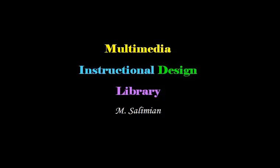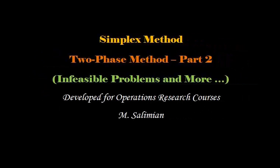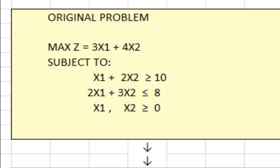In the previous video we looked at the general simple two-phase example and we talked about the cases that there will not be any feasible solution for the problem, and the case where we may have more than one artificial variable involved.